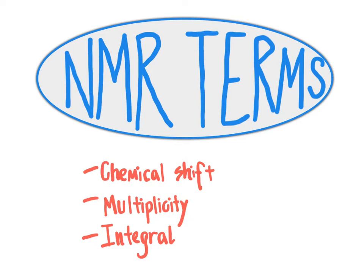In the next several videos, we are going to build our understanding of NMR spectroscopy, particularly with the purpose of being able to take NMR spectral data and use that to determine the complete chemical structures for molecules of moderate complexity. In order to get to that point, we need to start by building a foundation of understanding some basic terminology. Three key terms you will need to be familiar with are chemical shift, multiplicity, and integral.